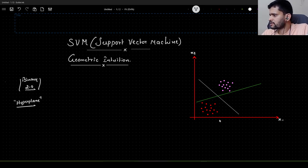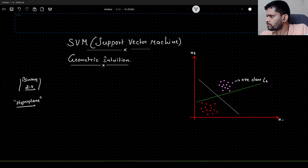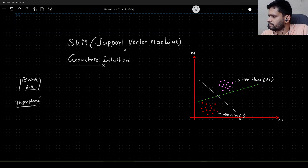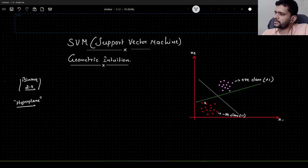So let us say we have a two dimensional space; the coordinate system are represented as x1 and x2, and these are the data points that we have. These data points here, let me call this as positive class belonging to class plus 1, and these data points here, let me call it as negative class belonging to class minus 1. In case of logistic regression, it could choose either of these two as its decision boundary in order to separate out these data points among these two classes.